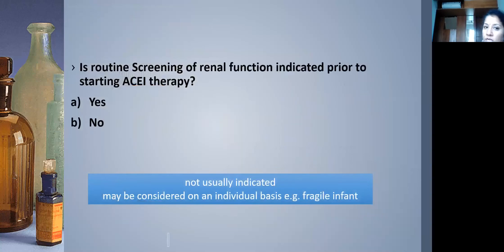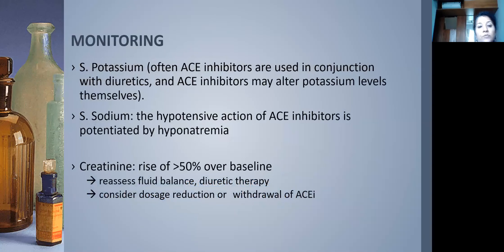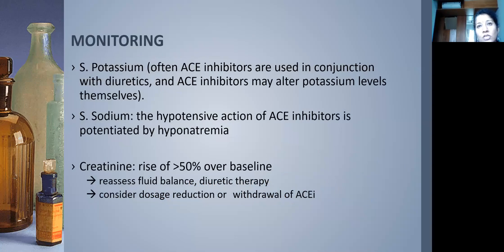Routine renal function screening prior to ACE therapy is somewhat debatable, but for fragile infants, severe heart failure, or volume-depleted infants it is best to do a baseline creatinine. Monitor serum potassium, sodium, and creatinine periodically. If creatinine rises more than 50% above baseline, stop the ACE inhibitor or reassess fluid and diuretic therapy. Importantly, instruct parents to stop ACE inhibitors when the child has gastroenteritis, as a child we saw recently developed renal failure during such illness.